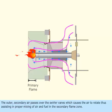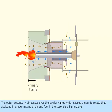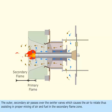The outer, secondary air passes over the swirler vanes, which causes the air to rotate, thus assisting in proper mixing of air and fuel in the secondary flame zone.